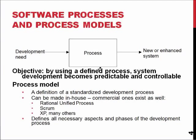Software processes and process models may sound like really complicated and complex systems, but actually they are none of that. A software process model, in its simplicity, is a roadmap or list of activities which define how you can advance from development needs or observed possibility for markets to an existing or ready-to-launch system which you can sell to your customers.